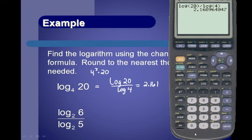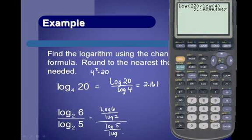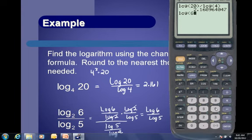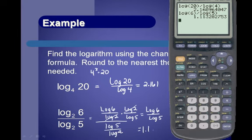For log_2(6) / log_2(5): applying change of base to each gives [log(6)/log(2)] ÷ [log(5)/log(2)]. Dividing by a fraction means invert and multiply, so the log(2) terms cancel, leaving log(6)/log(5). On the calculator: log(6) / log(5) ≈ 1.113. Alternatively, enter the full expression with parentheses — [(log(6)/log(2)) / (log(5)/log(2))] — which gives the same result.